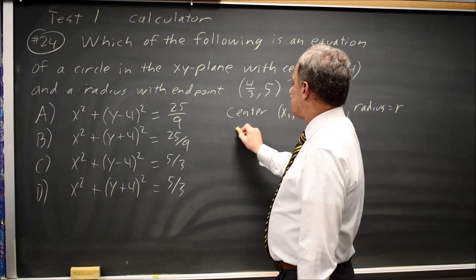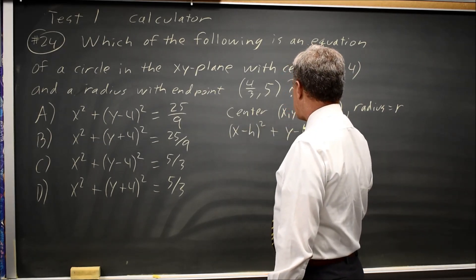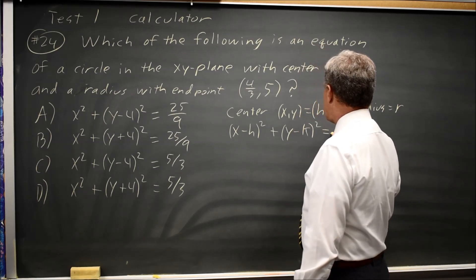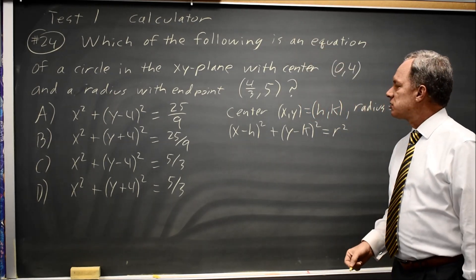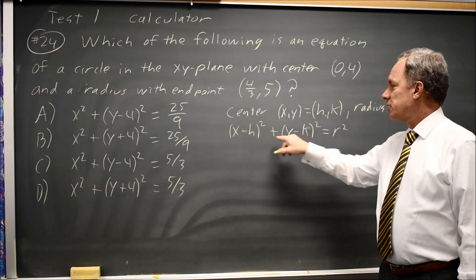the general equation is x minus h quantity squared plus y minus k quantity squared equals r squared. And this is the distance formula from the center (h,k) to a general point (x,y).